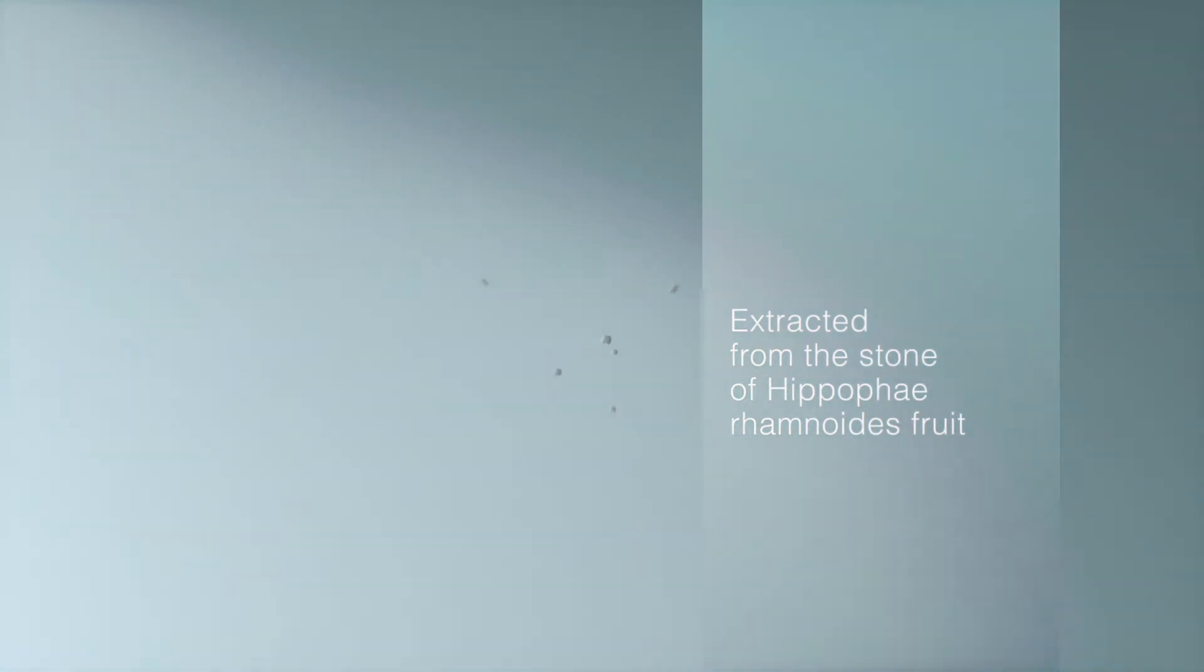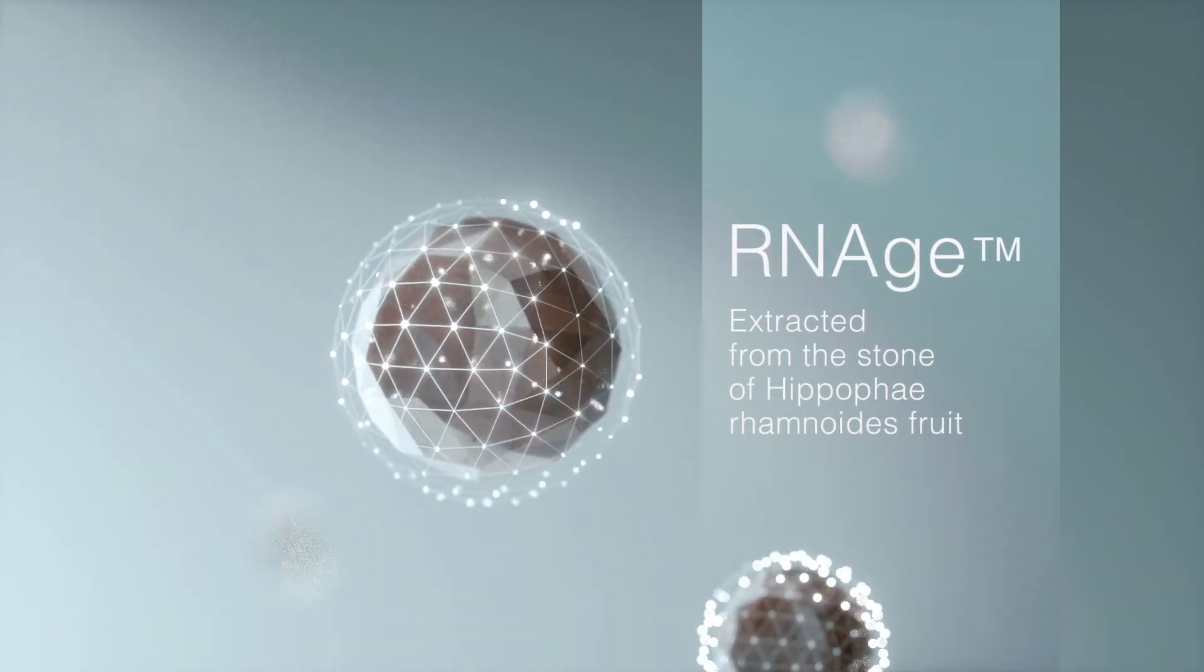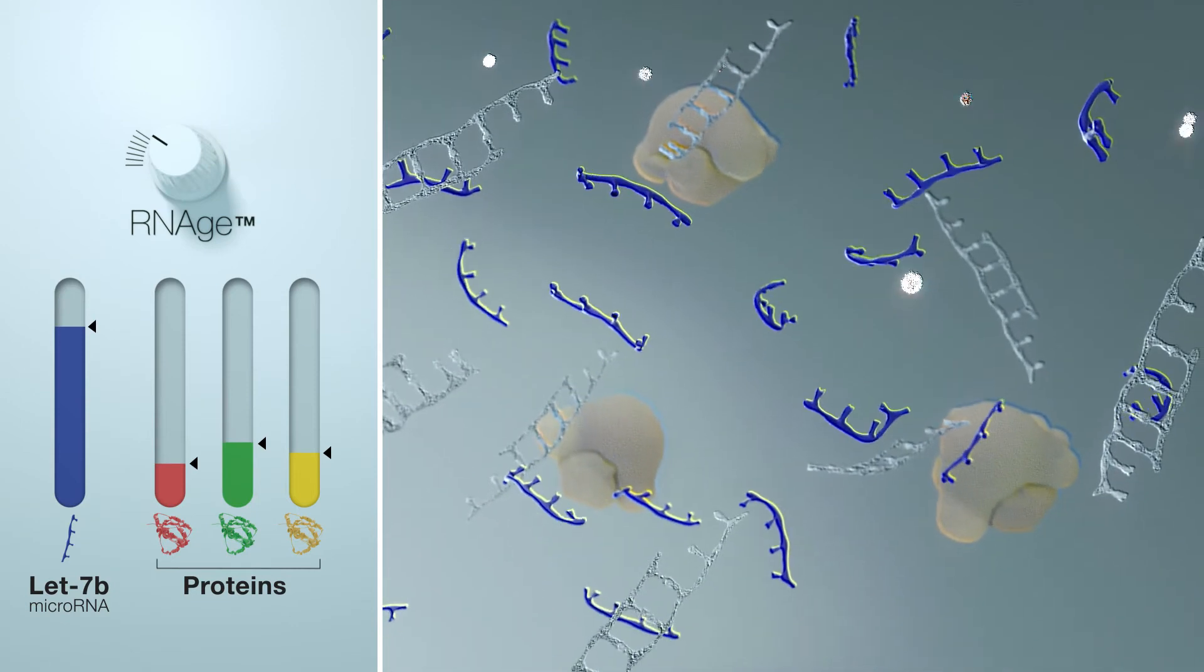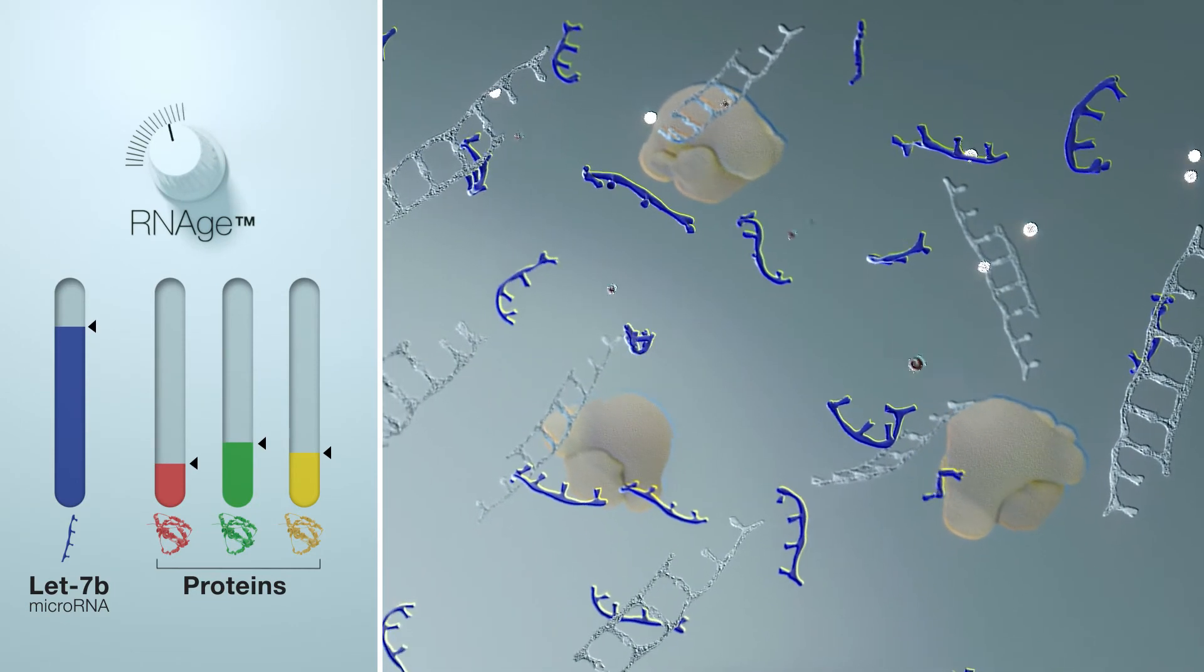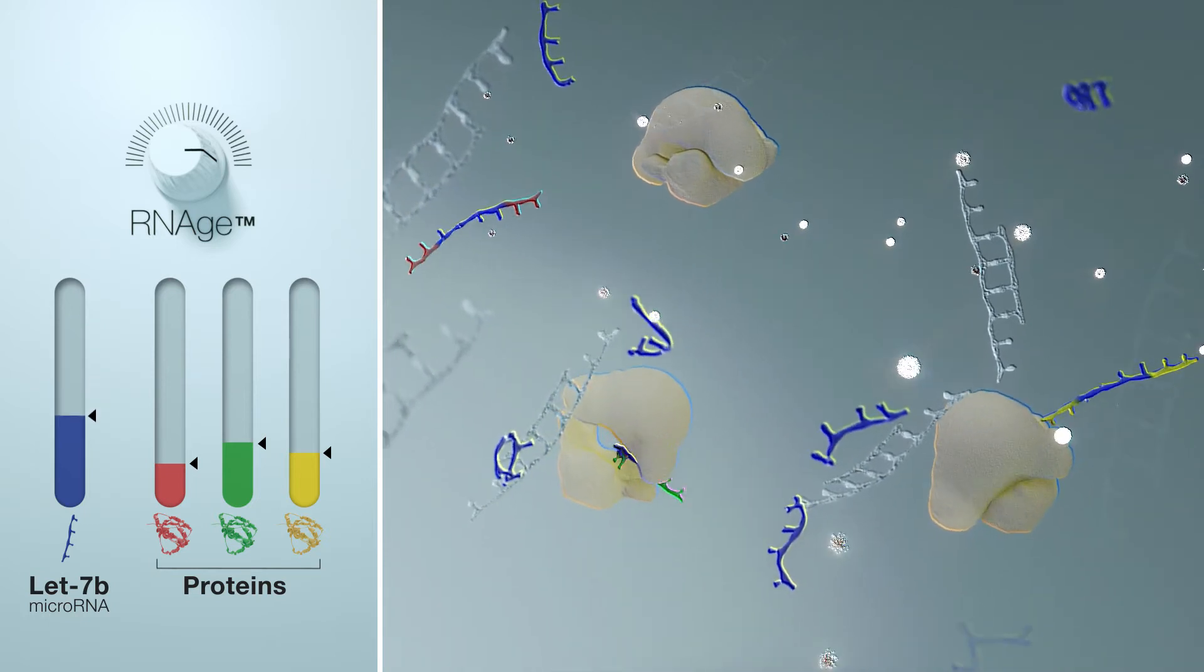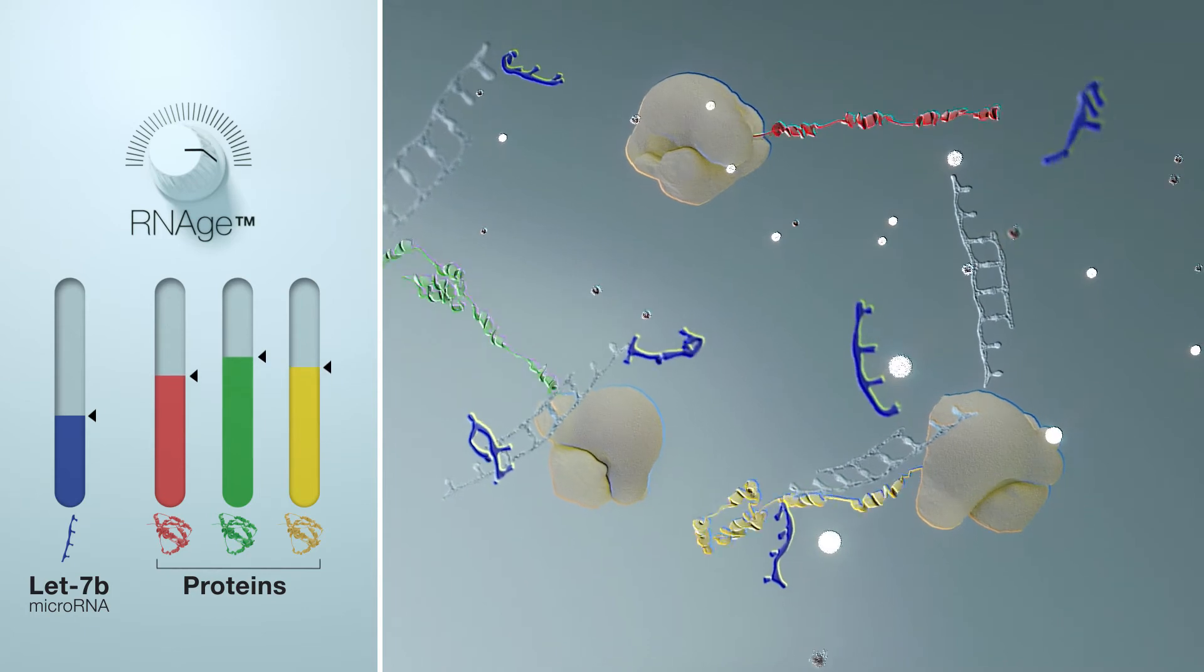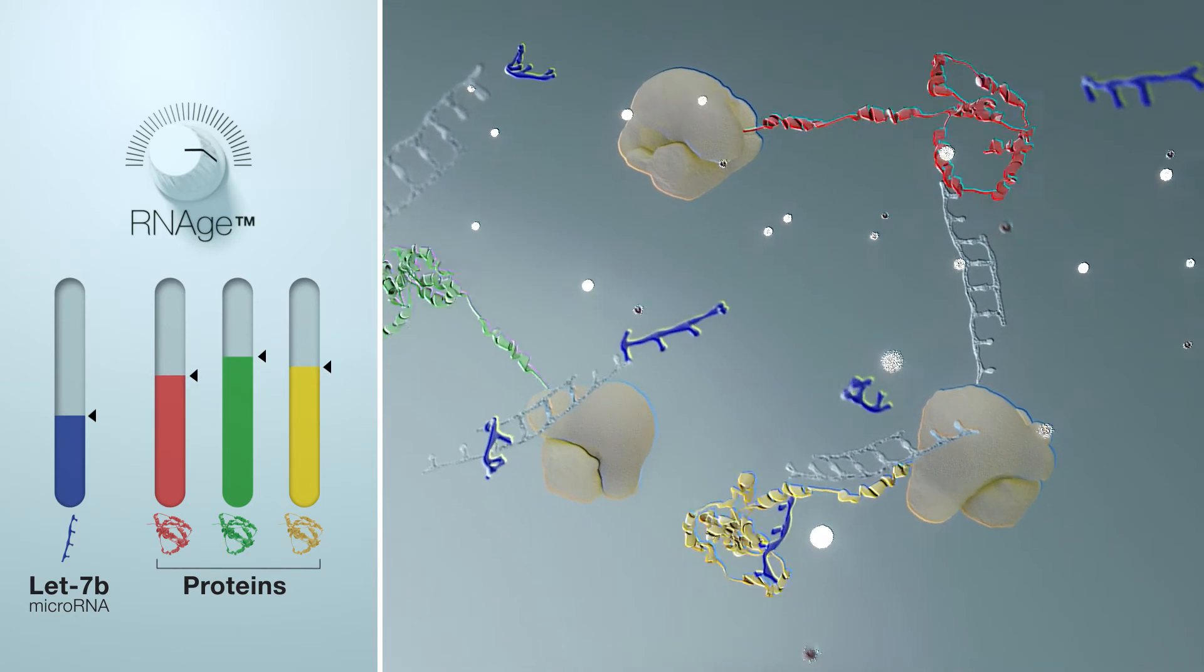Extracted from the stone of hippopharomanoids fruit, we created RNAge, a natural active substance able to regulate the number of LET7b microRNA contained in skin cells. By reducing the amount of this microRNA, the synthesis of different proteins increases, and the skin's regenerating functions are improved.